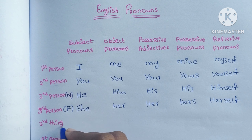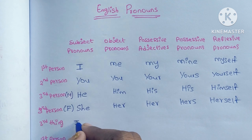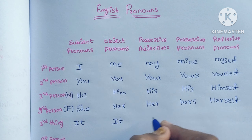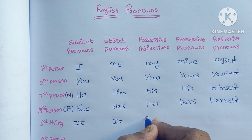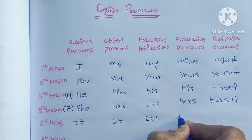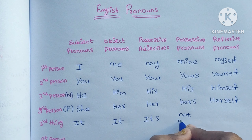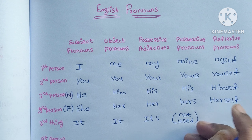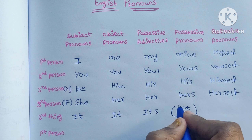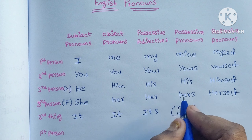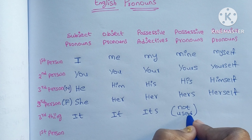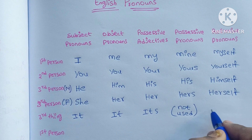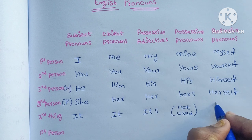Third person singular neutral: subject and object are 'it', possessive adjective is 'its'. Note that 'its' is not used as a possessive pronoun. The reflexive form is 'itself'.